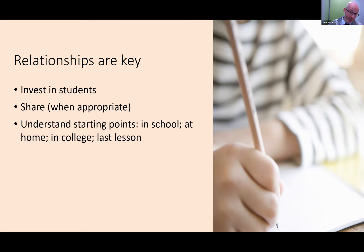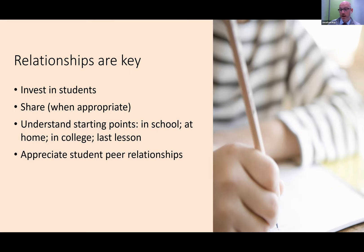A big part of that is understanding starting points. What school did they go to? What was their experience like? Were they the star pupil or pushed to the side? What were relationships like at home? Do they live at home? We also need to know the relationships students have with each other. If I sanction one student, what will be the impact on their group of friends? Not saying don't do it — but have it in mind, because where we sanction one student, we may damage a relationship with two or three others. We need to know what's coming.